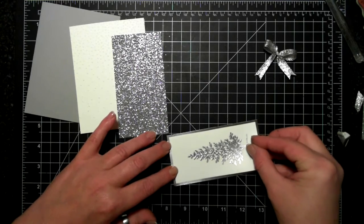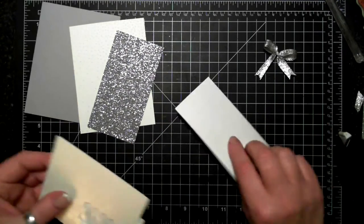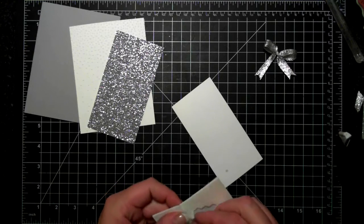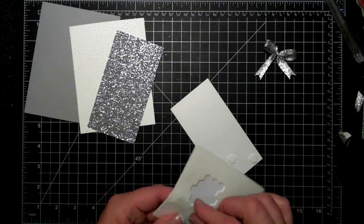The dimensionals help it stick to the glimmer paper. The glimmer paper is really hard to stick to, so dimensionals work really well.